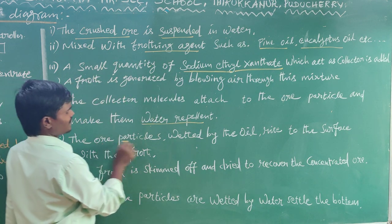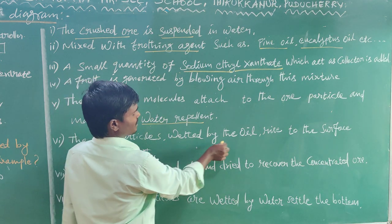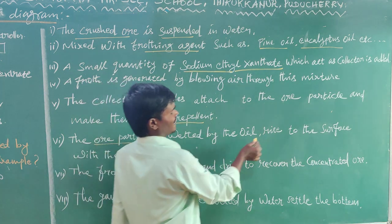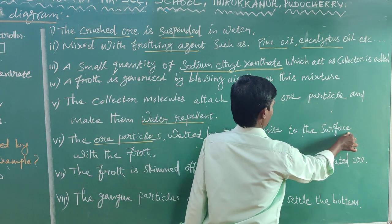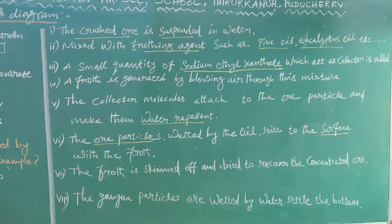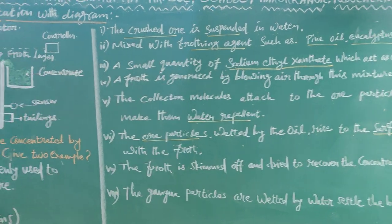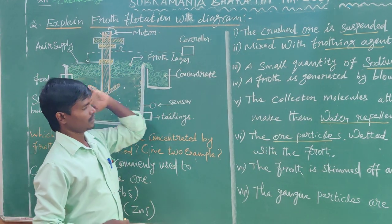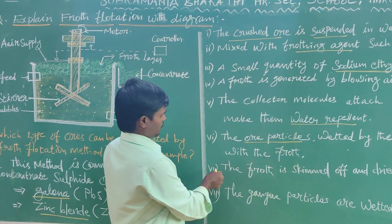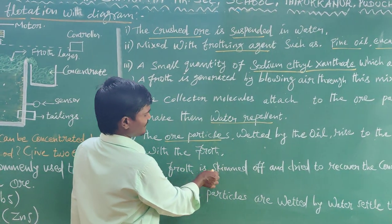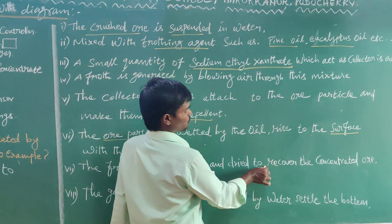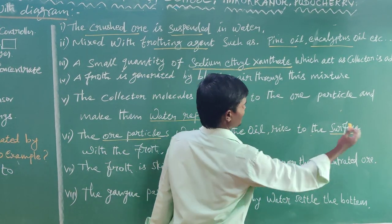The ore particles are wetted by the oil and will rise to the surface. In the container, the ore particles come up from the water. The froth layer will come from the water. The froth is skimmed off and dried to recover the concentrated ore.